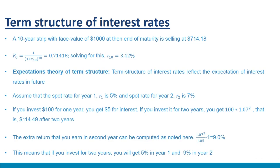To estimate spot rates for different maturities, all you need is bonds with single cash flows — STRIPS — for different maturities. For example, a 10-year STRIPS with a face value of $1000 at maturity is selling at $714.18. The 10-year spot rate is computed as: 1/(1+r10)¹⁰ = 0.714, giving r10 = 3.42%. In this manner, one can estimate the entire term structure of interest rates.